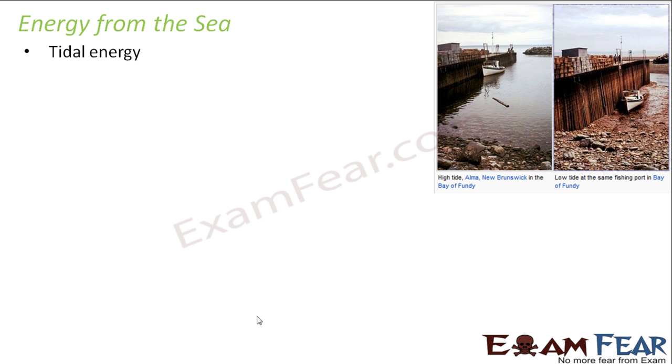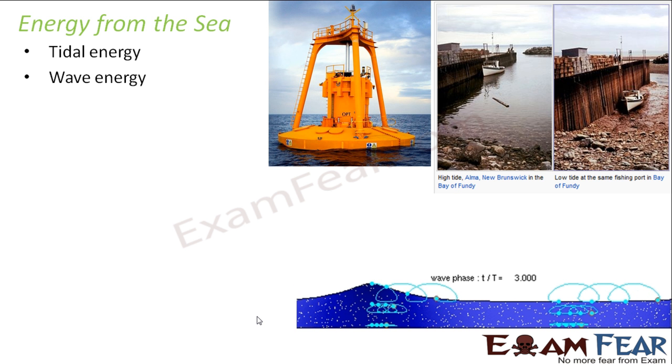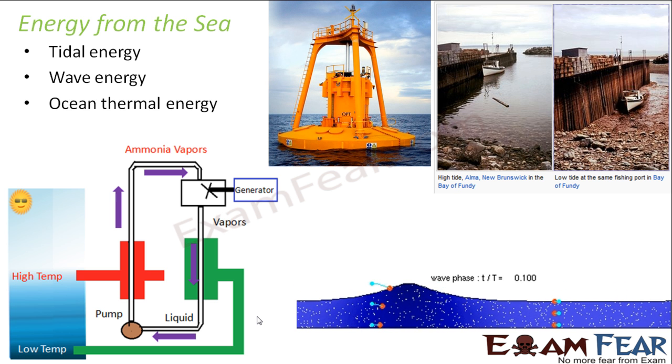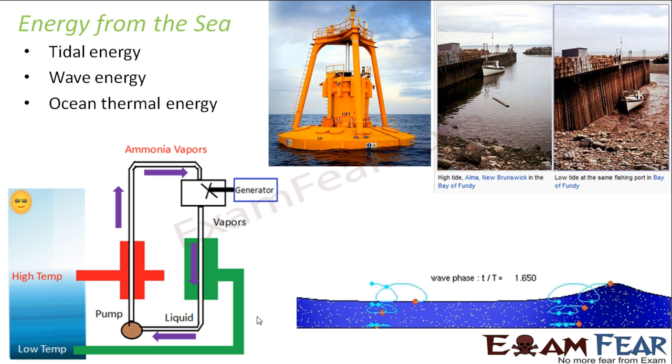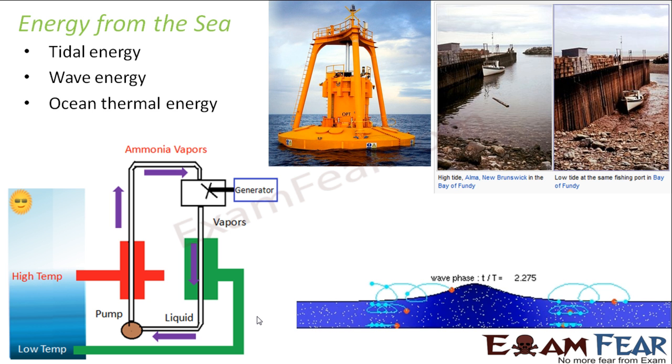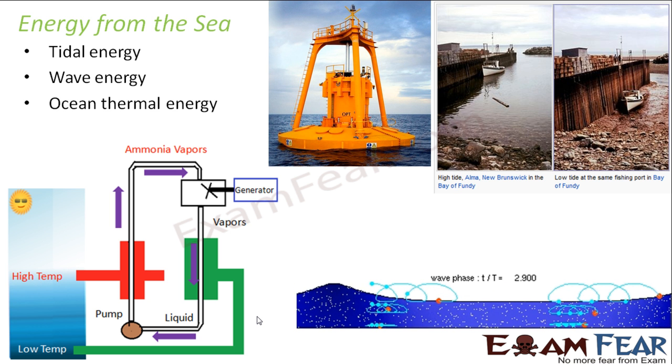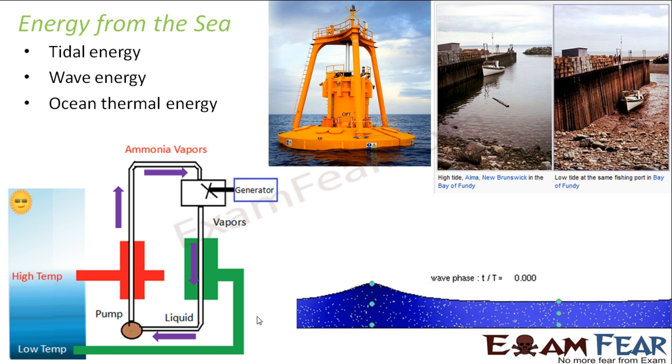Now let us talk about some other forms of energy, which are again non-conventional energy sources. We will now talk about some of the energy which we obtain from the sea. There are many different kinds of energy harnessed from the sea: the first one being tidal energy, wave energy, and ocean thermal energy. We will discuss each of these in detail, starting with tidal energy.